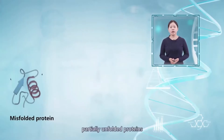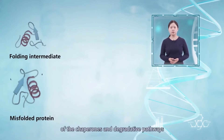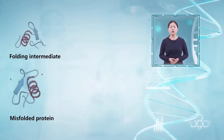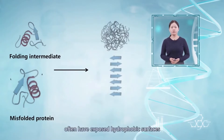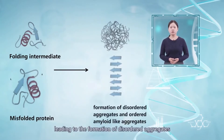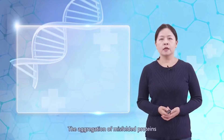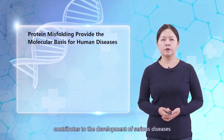In some cases, partially unfolded proteins and protein folding intermediates escape the quality control activities of the chaperones and the degradative pathways. The soluble proteins are turned into a misfolded state. Proteins that are not properly folded often have exposed hydrophobic surfaces that render them sticky and accumulate, leading to the formation of disordered aggregates and ordered amyloid-like aggregates. The aggregation of misfolded proteins contributes to the development of severe disease.